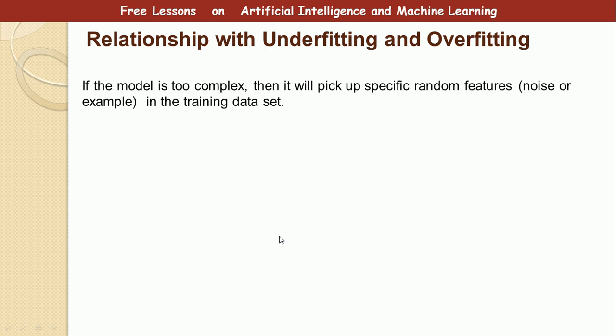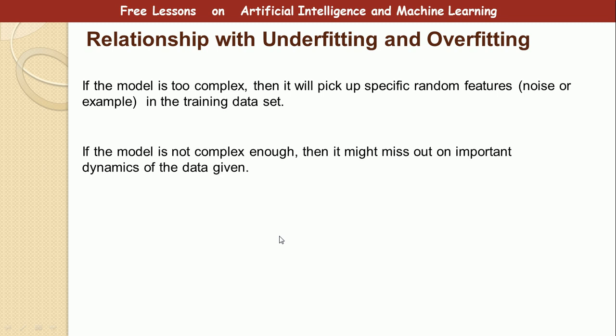Let's now see the relationship between bias-variance trade-off and overfitting or underfitting. If you increase the bias it leads to underfitting; if you increase the variance it leads to overfitting. If you increase the bias, the variance will be reducing, and if you increase the variance, the bias will be decreasing. These are intricate, completely intertwined relationships between these two concepts.